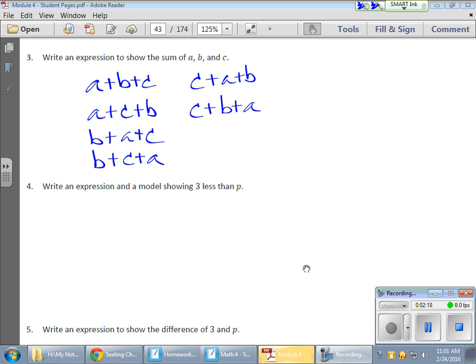So, write an expression and a model to show three less than P, three less than. Now, if I were to use a value of P, and let's say P equals six, three less than six would be three. Now, let me use a different number, so I'm not using threes all over the place here. Let's just say seven. Three less than seven. Well, three less than seven would equal four.